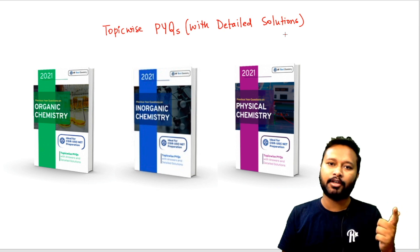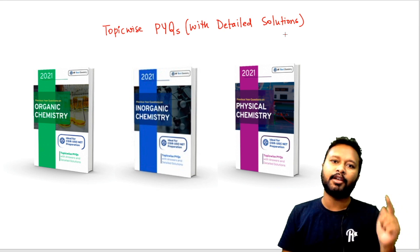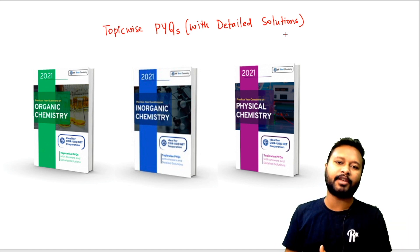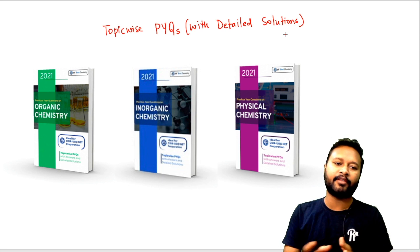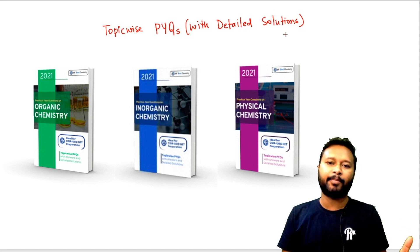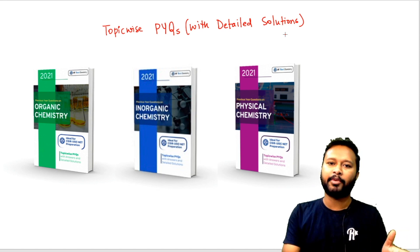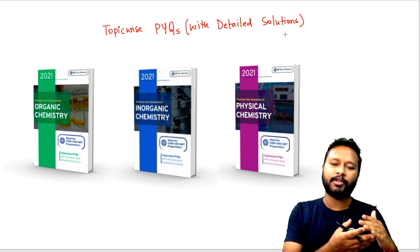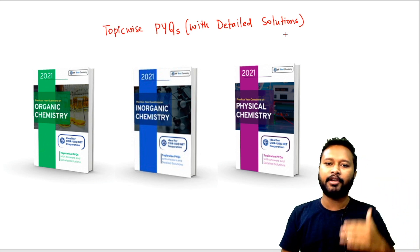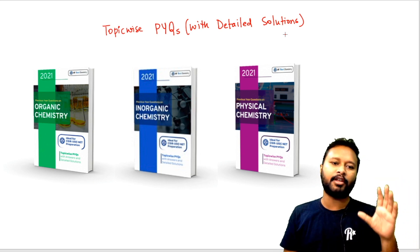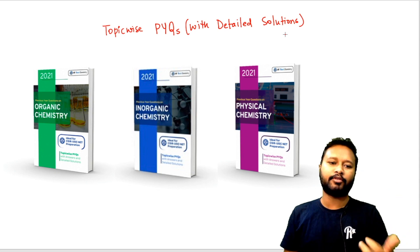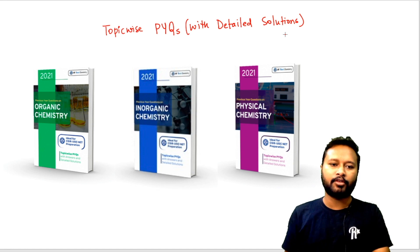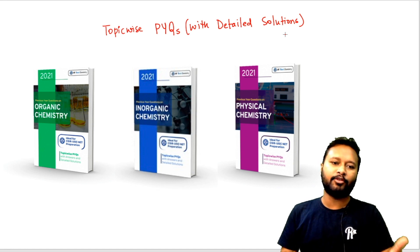In this ebook, all previous years questions from CSI NET, starting from June 2021 all the way back to 2011, have been searched and questions from different topics have been sorted out and compiled separately. So every topic has a particular question series covering from 2011 till 2021, with all the questions that were asked.